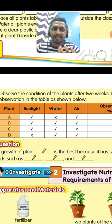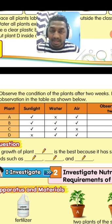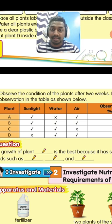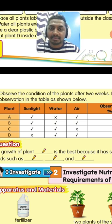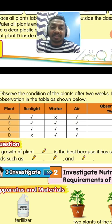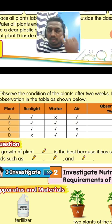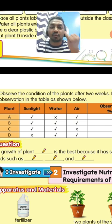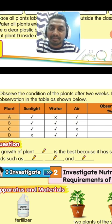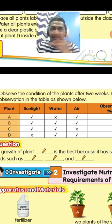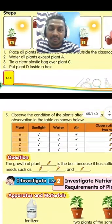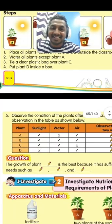Number two, plants need water. Number three, they need air - which is carbon dioxide. Just like us: if there is no oxygen, we will die. The same goes for plants - if there is no air, they will die. So for plant growth, they need sunlight, water, and air. For germination of seeds, they need water, air, and a suitable temperature. That is the difference between the plant and the seed. That's all for today - see you in the next class, thank you, bye!